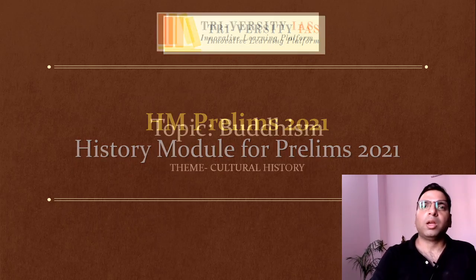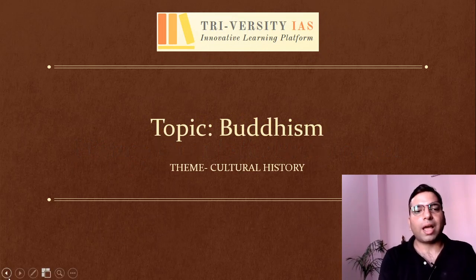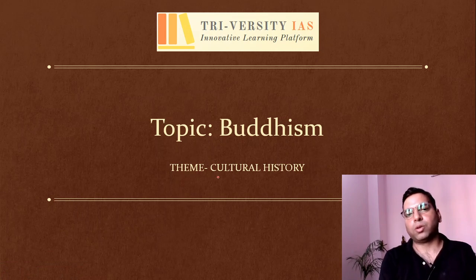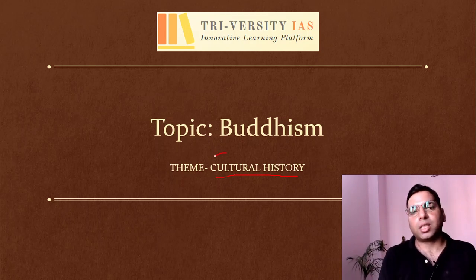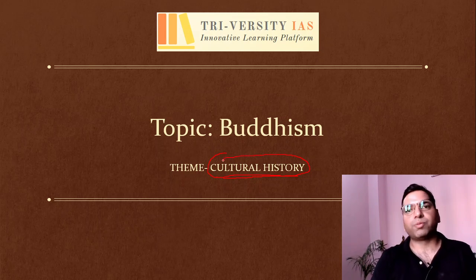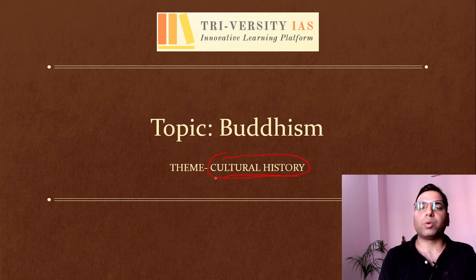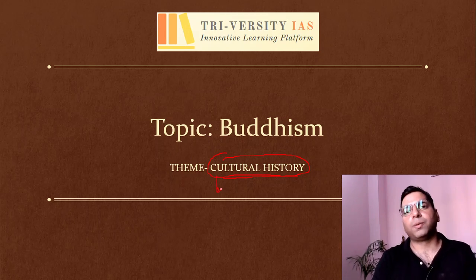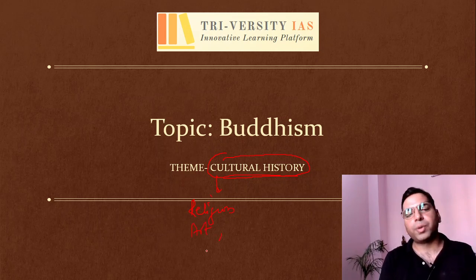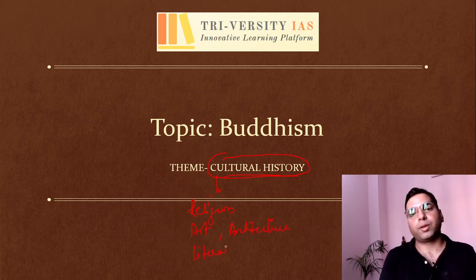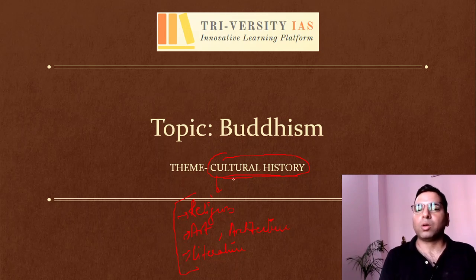Let's start with our first theme. I have divided the whole topic of ancient and medieval into four themes: political, economic, social, and cultural history. The theme of cultural history is the most important with respect to your prelims — the upcoming CSE 2021 — as UPSC has a number of questions from culture. Cultural history comprises religion, art (both performing and non-performing), architecture, literature, and so on. These are the sub-themes which comprise your cultural history.